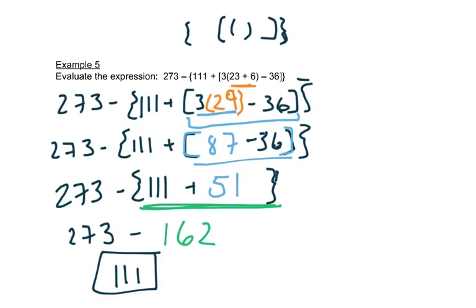That's how we follow order of operations — just be patient and write every step down. That keeps you from making mistakes, and each step gets shorter and shorter.